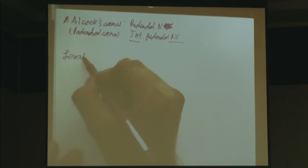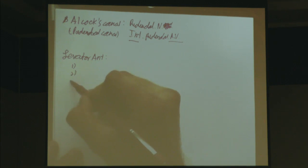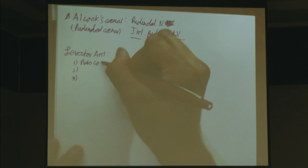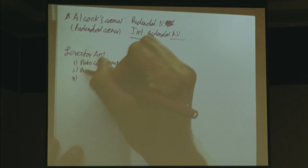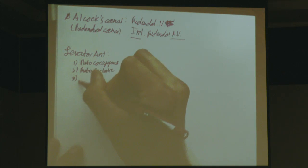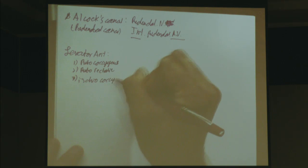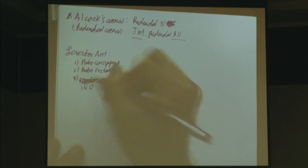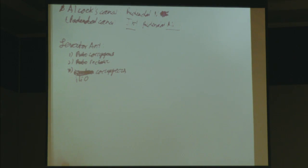Next, we're going to hit the muscles that make up the levator ani. Levator ani is comprised of three different muscles: pubococcygeus, puborectalis, and iliococcygeus.